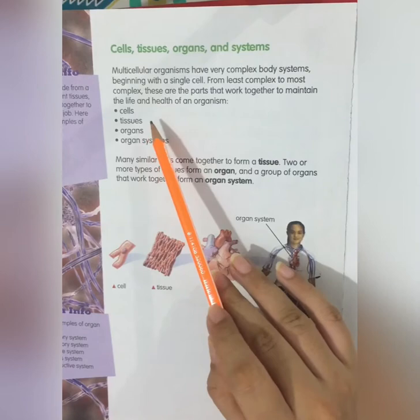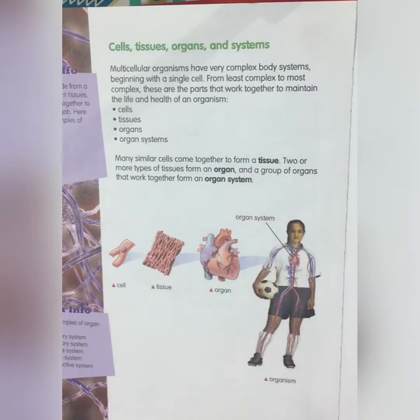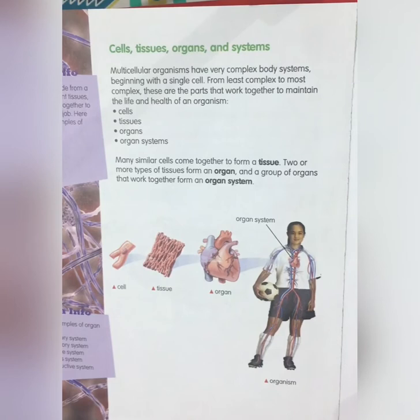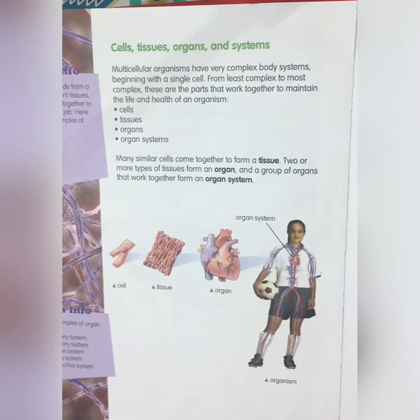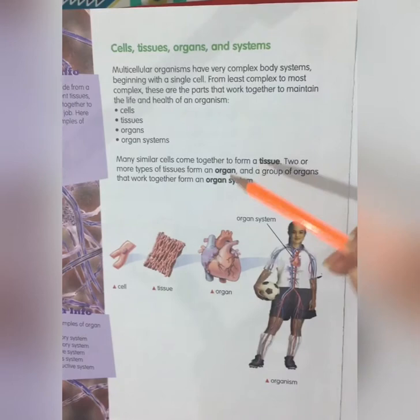Cells, tissues, organs, and organ systems — many similar cells come together to form a tissue, and in the same way tissues come together to form an organ, and organs come together to form an organ system.